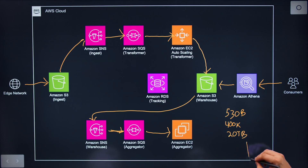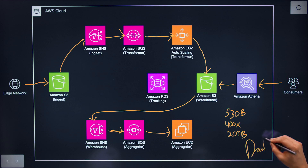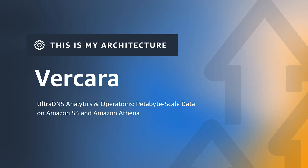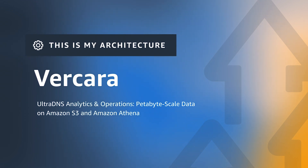Hi, I'm Don with AWS. And I'm David with Verkara, and this is my architecture. So David, what I think I'm looking at is a very scalable architecture for basically transforming, aggregating, and providing a query mechanism based on edge network data. Can you walk us through the architecture from the edge?